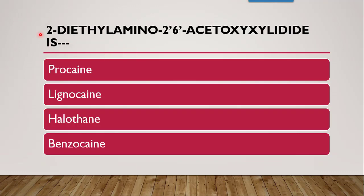Next question: the IUPAC name given belongs to which drug? The IUPAC starts with 2-diethylamino. Since it contains an amine, and the continuation is 2,6-acetoxyxylidide — xylidide means a phenyl ring with 2 methyl groups — it is lignocaine. The 2-methyl substitution is present for preventing degradation by enzyme, oxidation, or hydrolysis.